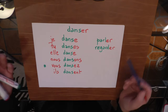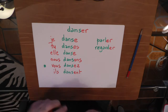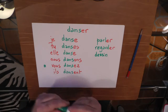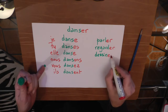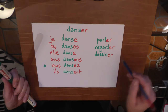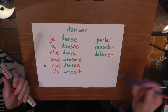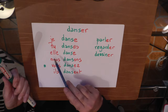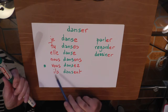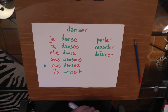Another one is 'dessiner' — first group, no exceptions. 'Dessiner' means to draw. For example, 'I draw a cat' is 'je dessine un chat.' The conjugation follows the same pattern: je dessine, tu dessines, il dessine, nous dessinons, vous dessinez, ils dessinent. Same thing every time.